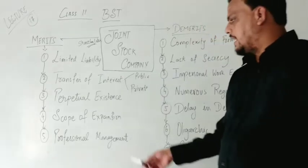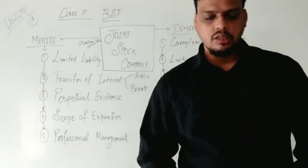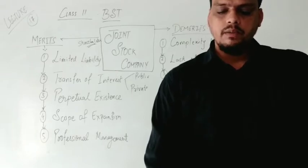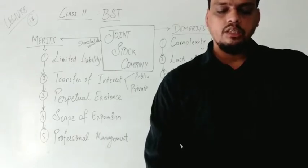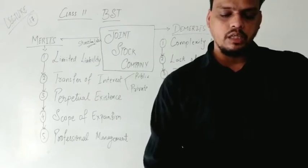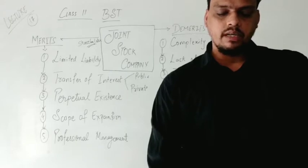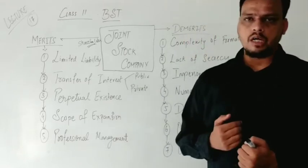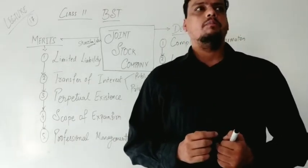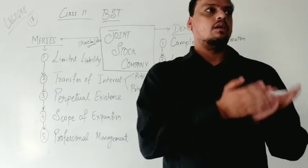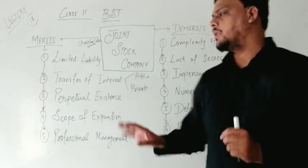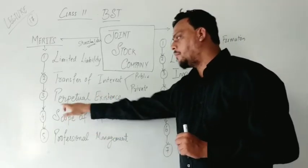The next point is perpetual existence — point number three. A joint stock company enjoys perpetual existence. Change in ownership and management does not affect its continuity. The existence is not affected by the death, retirement, insolvency, or incapacity of any member. Once a joint stock company is started, even if shareholders die, transfer shares, or become insolvent, the company will not be dissolved — the company will continue. This is the point of perpetual existence.